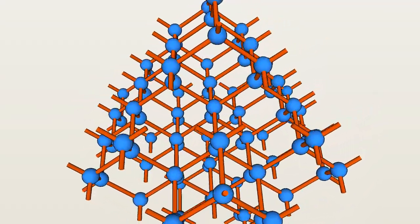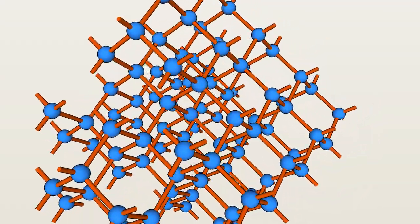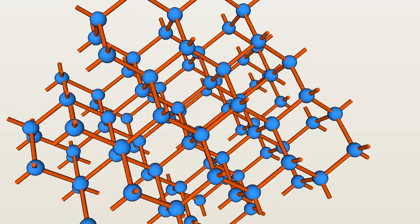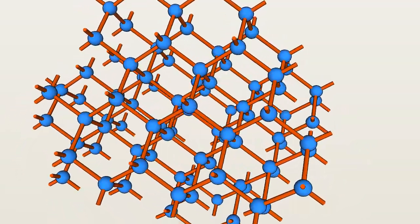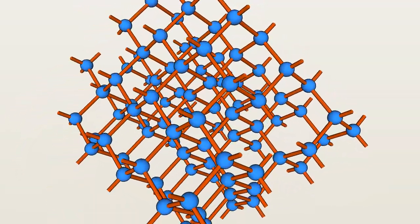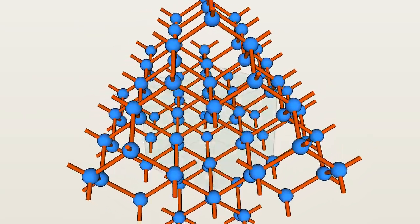Hello. This is a lump of diamond. The blue spheres are carbon atoms. Each carbon atom has four bonds with its neighbors. The structure of this framework gives the diamond its strength, so let's look at this structure.